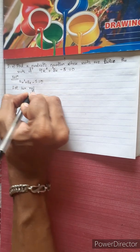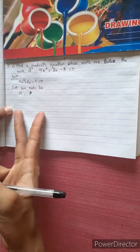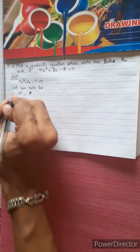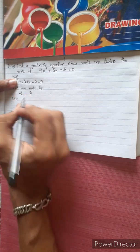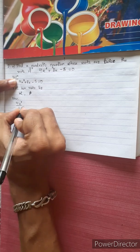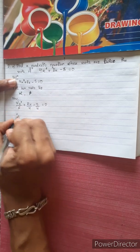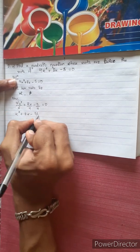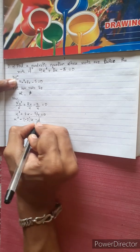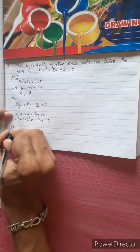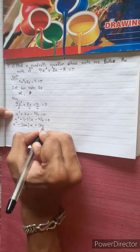Let the two roots be alpha and beta. Divide the equation by 4: 4x² divided by 4 plus 8x divided by 4 minus 5 by 4 equals 0, giving x² plus 2x minus 5 by 4 equal to 0. Comparing with x² minus (sum of roots)x plus product of roots equal to 0.